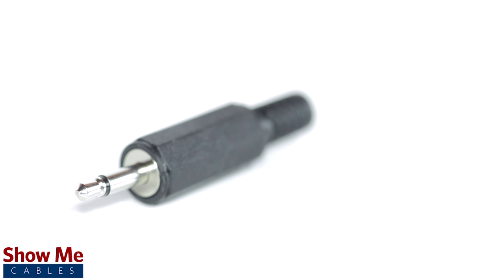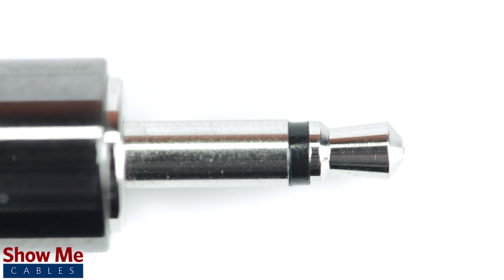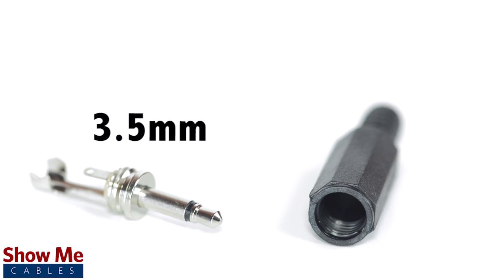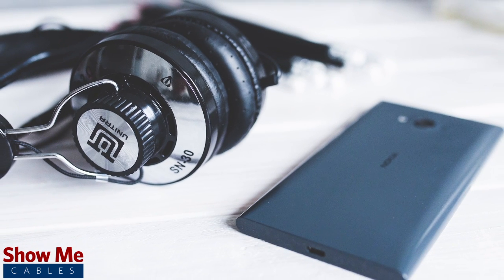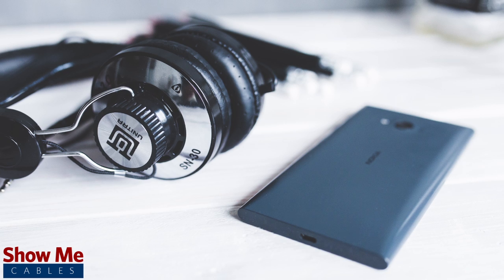A mono connector can be identified by the single black plastic band near the tip of the cable. 3.5mm refers to the diameter of the plug. It is the most common size plug for small electronic devices such as headphones.